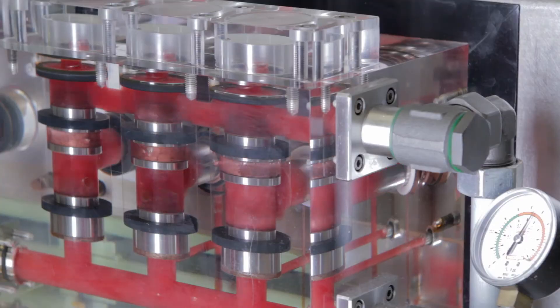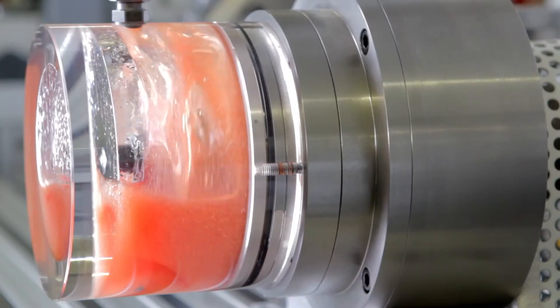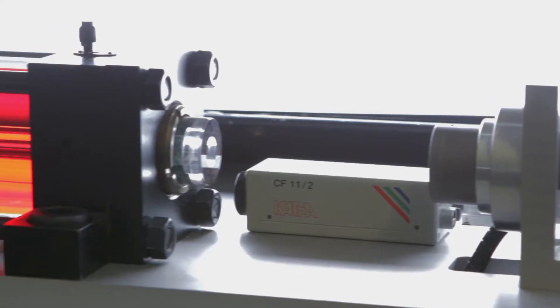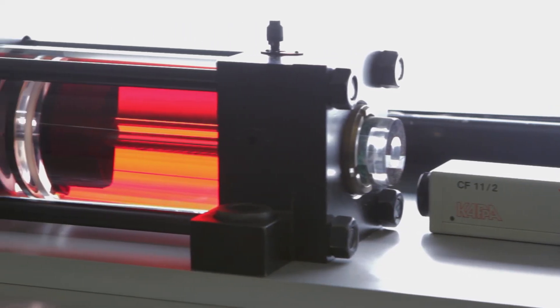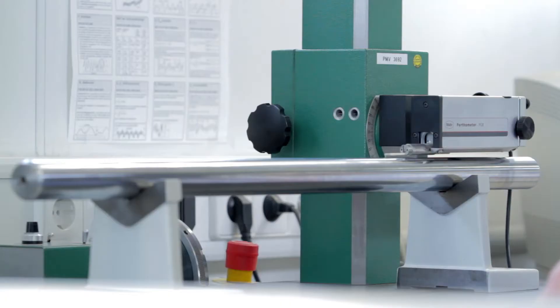Test setups with plexiglass housings and rods provide insights into the functional properties of sealing systems in dynamic applications. These tests, for example, make it possible to analyze the deformation of sealing edges depending on the system pressure. They reveal how accurately reality matches the simulation results of the FEA.